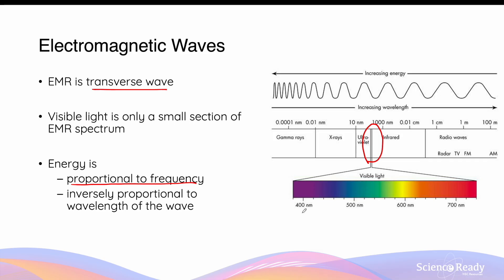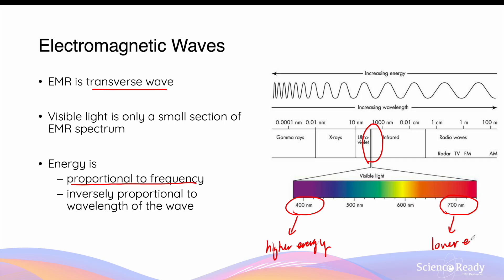For example, on the visible light spectrum, violet light has a shorter wavelength of roughly 400 nm, which corresponds to a higher energy. Compared to red light on the other side of the spectrum, which has a much longer wavelength of roughly 700 nm — this will have a lower amount of energy.